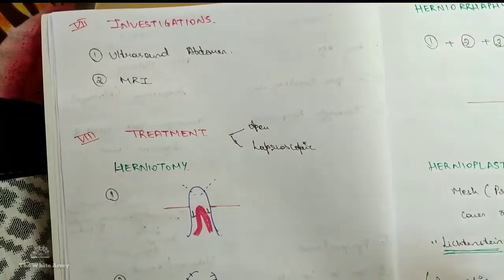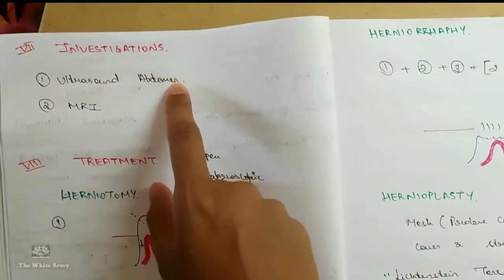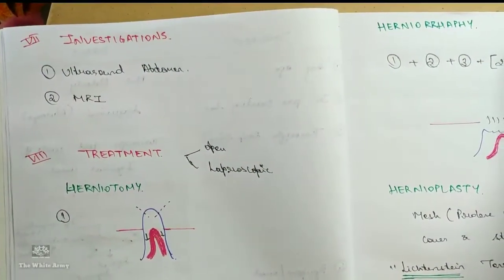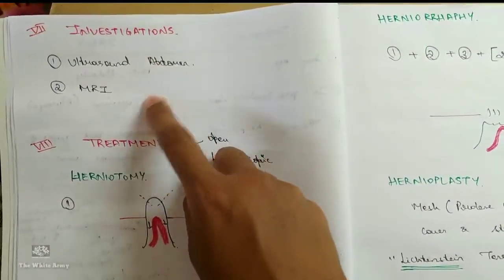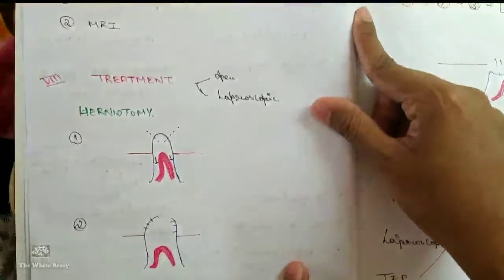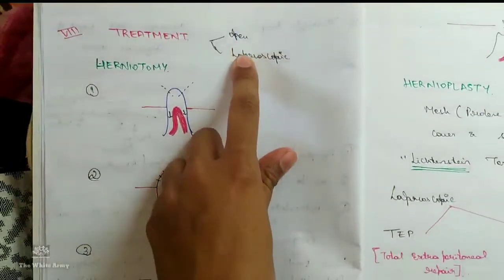And management which includes investigations. Diagnosis of hernia is clinically diagnosed. But you may also use ultrasound or MRI. Treatment. Treatment can be open or laparoscopic.